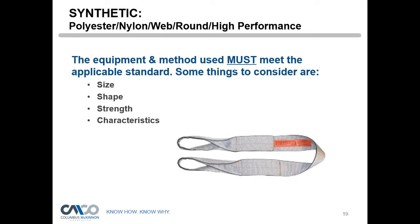For most tie-downs you'll be using grade 70 chain, which has a gold chromate finish. The gold chromate finish is resistant to many types of weather — especially salt. In northern states where rock salt is put on roads, that salt will work its way up into your tie-downs and corrode them over time. The gold chromate finish slows that process down dramatically, though it probably won't prevent it entirely.